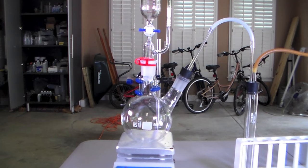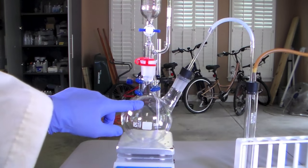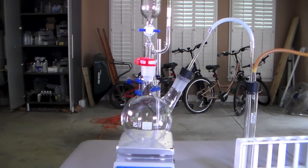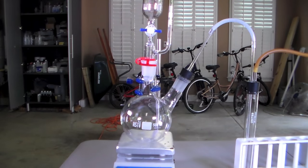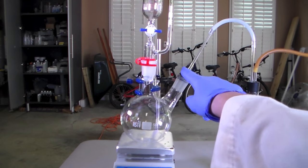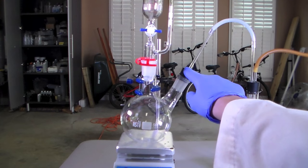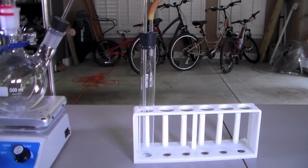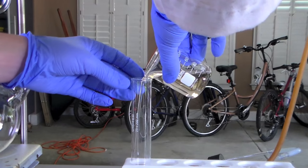The first part of the apparatus is the chlorine generator. This consists of a two neck round bottom flask with a pressure equalizing addition funnel on one neck and a one hole rubber stopper fitted with a glass tube in the other neck. Next is the chlorine drying tube, which will be filled with sulfuric acid.